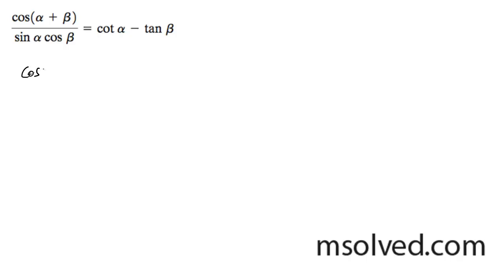So it's going to be cosine alpha cosine beta minus sine alpha sine beta, and this is all going to be over sine alpha cosine beta.